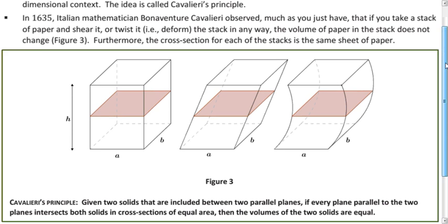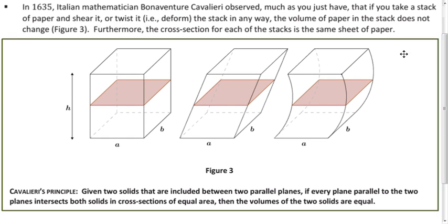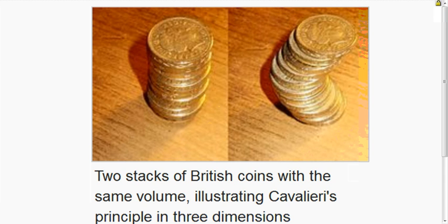So if we had a stack of papers and we twisted it, moved it around, you'd notice they have the exact same amount of sheets, so the volume hasn't changed, but it has a different shape. That's a really informal version of Cavalieri's Principle. If you think about it in terms of coins, it makes a lot of sense.